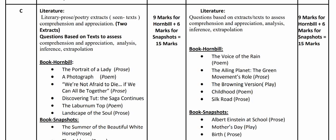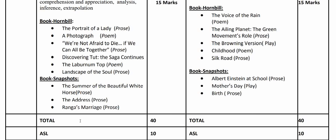The textbook from which lessons have been selected is Hornbill. The prose and poetry included are: 'The Portrait of a Lady' (prose), 'A Photograph' (poem), 'We're Not Afraid to Die… if We Can All Be Together' (prose), 'Discovering Tut: The Saga Continues', 'The Laburnum Top' (poem), and 'Landscape of the Soul' (prose). From the supplementary reader Snapshots, the selections are 'The Summer of the Beautiful White Horse' (prose), 'The Address' (prose), and 'Ranga's Marriage' (prose). The total marks for literature adds up to 15.